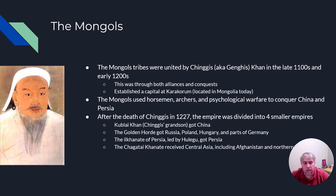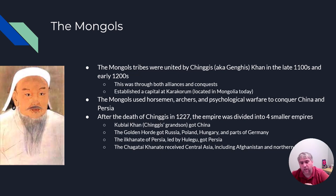Eventually, when Genghis Khan dies, his empire will be divided into four smaller empires: China, the Golden Horde, the Khanate of Persia, and the Chagatai Khanate.